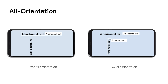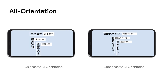Last but not least, V2 recognizes text written in all orientations. A piece of Latin text that has been rotated 90 degrees can be recognized in V2 but not in V1. This is especially helpful for scripts that are commonly written vertically. With Chinese and Japanese scripts, horizontal text, rotated text, and vertical text can all be recognized. All orientation support requires more computing resources and is currently offered in the four new script options.